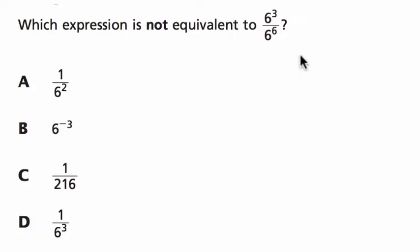Hello and welcome. We're going to solve this problem together, but first try it on your own. Alright, so they ask us which expression is not equivalent to 6 to the 3rd divided by 6 to the 6th. So I want to underline the word not because I often forget the goal of the problem. We are trying to figure out what this equals and which of these choices don't equal that.